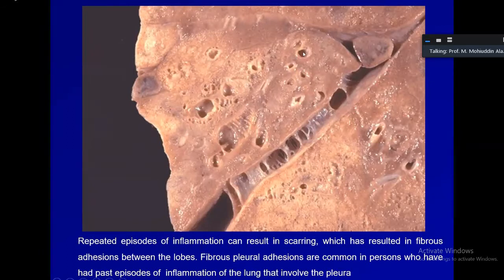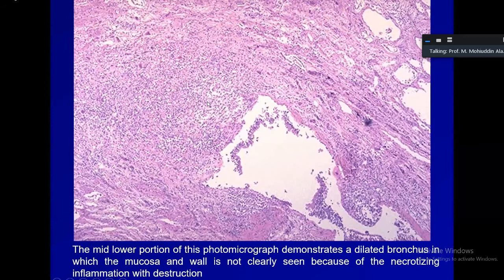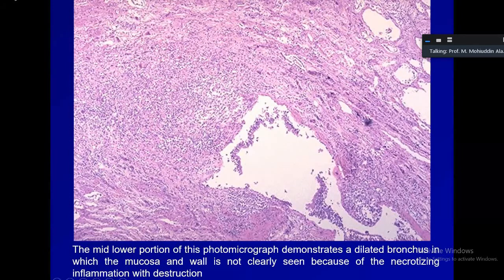The photomicrograph shows that the bronchial wall has been destroyed — what is appreciable is an inflammatory exudate comprising inflammatory cells and giant cells, with destruction of the wall. It gives a picture just like an abscess: loss of epithelium, loss of wall, and what remains is a necrotizing inflammatory exudate.